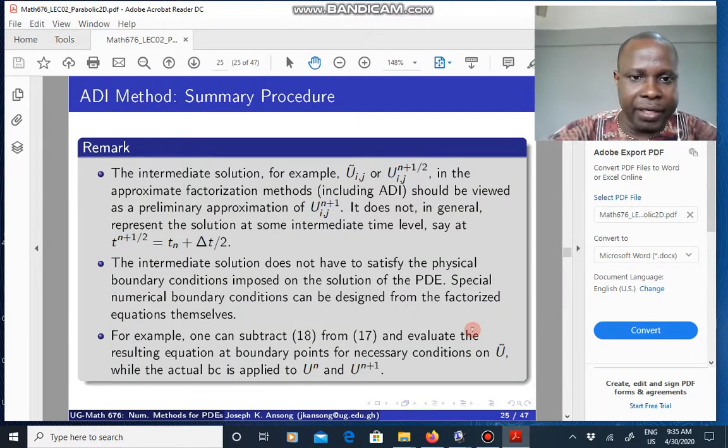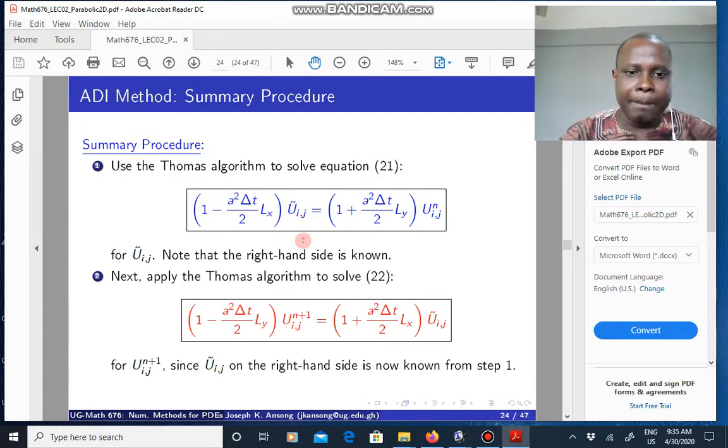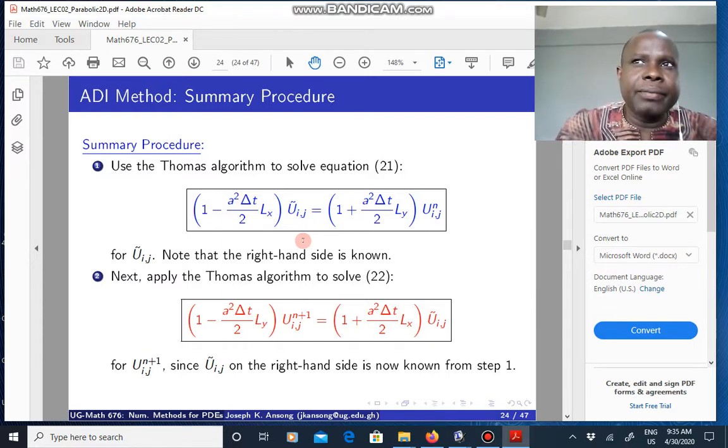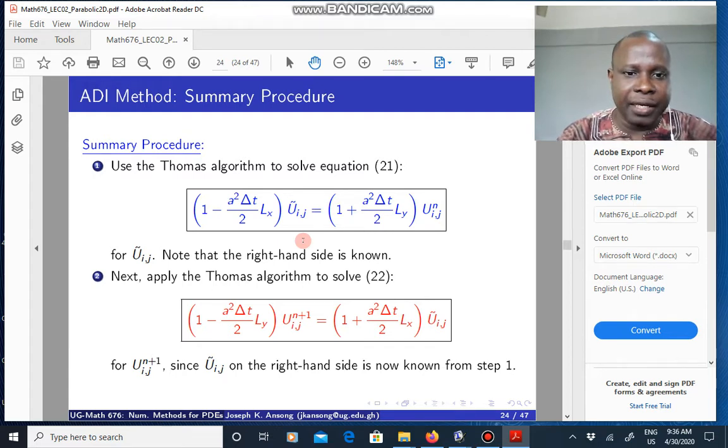Now, a few remarks are in order here. Note that when you are solving this first step, you are solving for U tilde here. But note that when the problem is set up, the boundary conditions are often set up for the actual U, not U tilde, which means you have to come up with a clever, more careful way of designing boundary conditions for the U tilde. And sometimes you can use these equations themselves to come up with the boundary conditions for it, because you need the boundary conditions for U tilde when you are solving this equation.